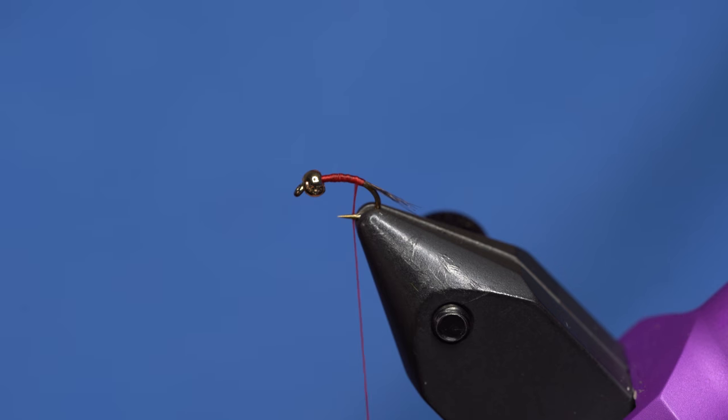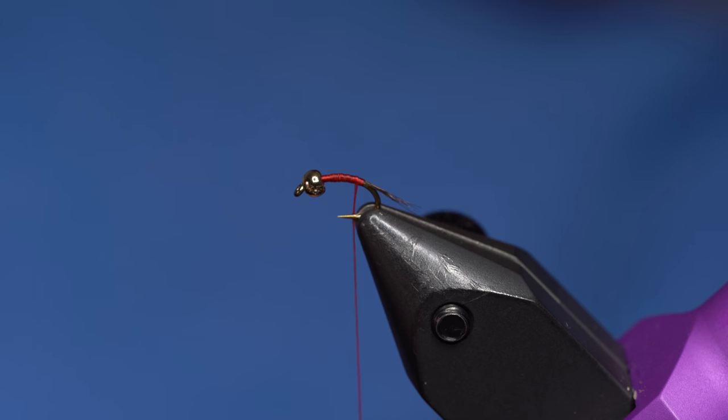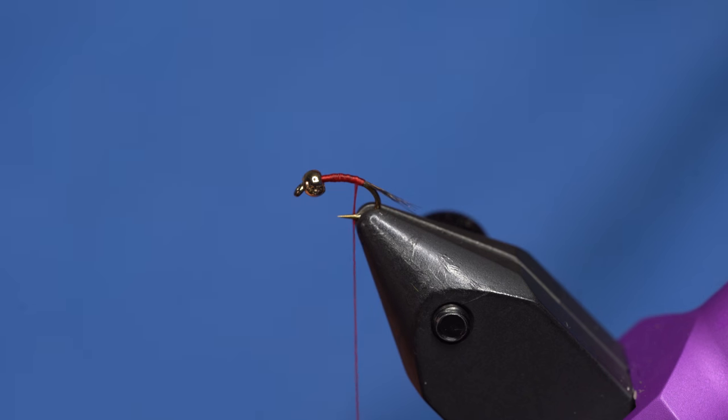The back of this is just gonna be hair's ear dubbing spun up in a dubbing rope loop, so it's pretty buggy dubbing, but when I spin that up it will go even smaller.